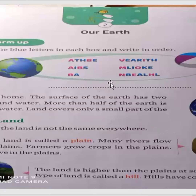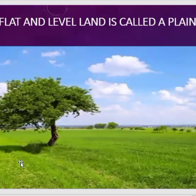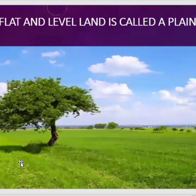Plain — flat and level land is called a plain. Many rivers flow through the plains. Farmers grow crops in the plains. Most people live in the plains. Flat and level land is called plain.